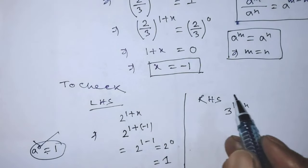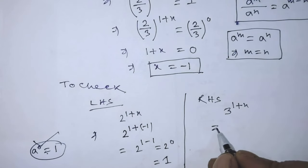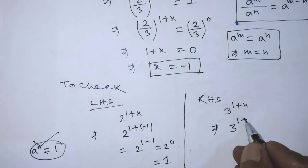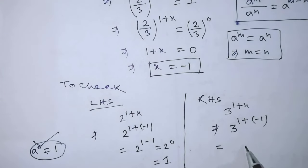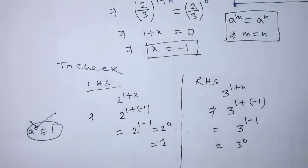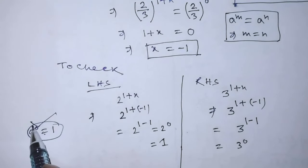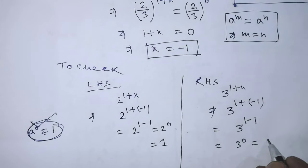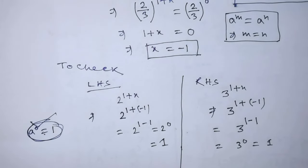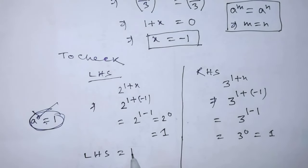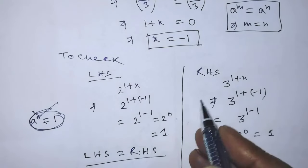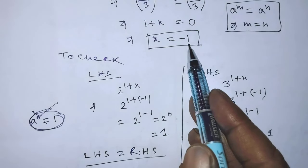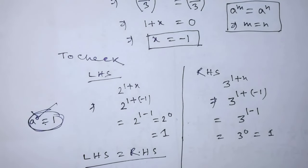Similarly, if you put the value of x equal to minus 1 on the right hand side of the given equation, then the right hand side becomes 3 to the power 1 plus minus 1, so it will be 3 to the power 1 minus 1, that is 3 to the power 0. According to this formula, we can write 1 in the place of 3 to the power 0. That means left hand side and right hand side are both the same, so it is clear that x equal to minus 1 is the correct solution. Our answer is complete. If you like this video and this trick, please support me and subscribe to my channel. Thank you, bye bye.